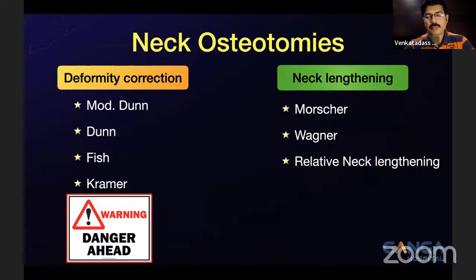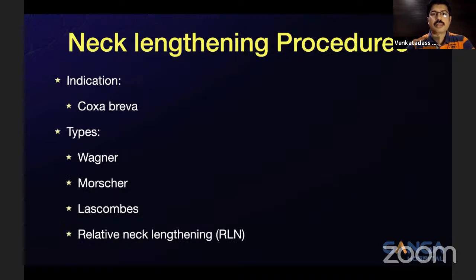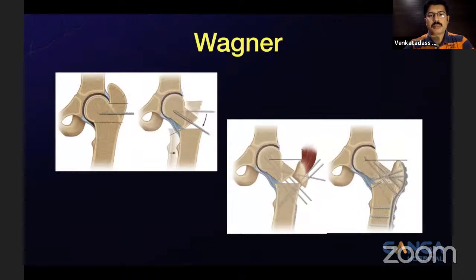A 20-year-old patient with healed slip showing coxa valga and impingement — treated with a valgus flexion derotation osteotomy using a DHS through a safe surgical dislocation approach, displacing the trochanter, with added osteochondroplasty. Healed well at six-month follow-up. For valgus osteotomy, choices include the pediatric hip plate, DHS, or angled blade plate. DCP is technically difficult. Moving on to neck osteotomies, which are more complex — Mandar will cover the Dunn and modified Dunn.